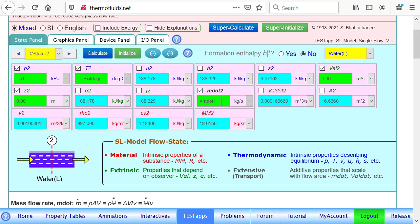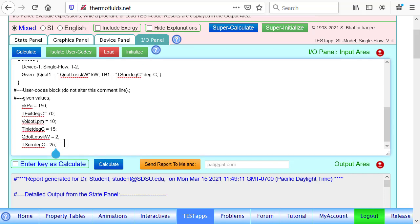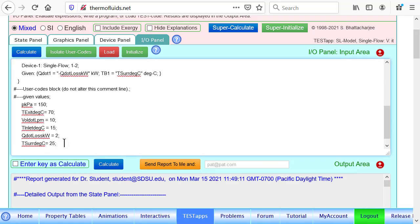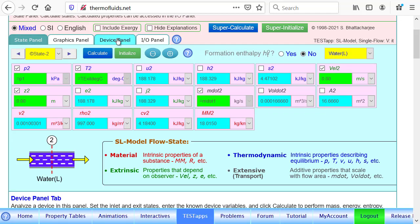So therefore state one and state two have been calculated. If I go to the I/O panel now, we can start calculating what's wanted in the problem. Part A is about finding power consumption.